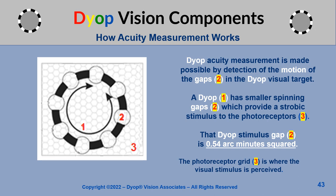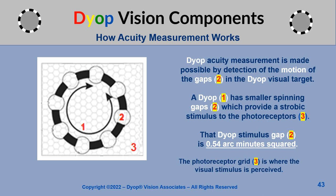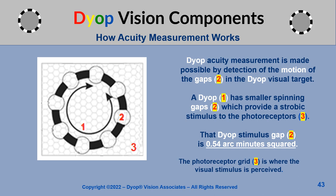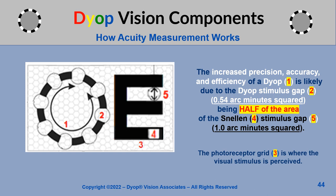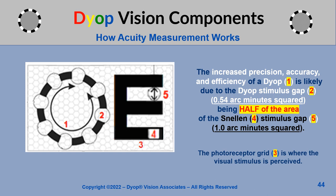A dyop has smaller spinning gaps which provide a stroboscopic stimulus to the photoreceptors. That dyop stimulus gap is 0.54 arc minutes squared. The increased precision, accuracy, and efficiency of a dyop is likely due to the dyop stimulus gap being half of the area of the Snellen stimulus gap.